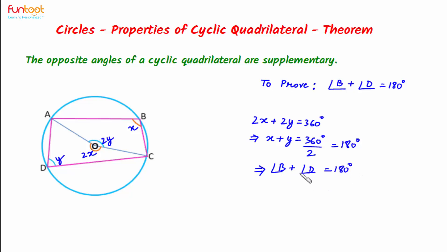And if angle B plus angle D is 180 degrees, this implies that angle A plus angle C is also equal to 180 degrees.